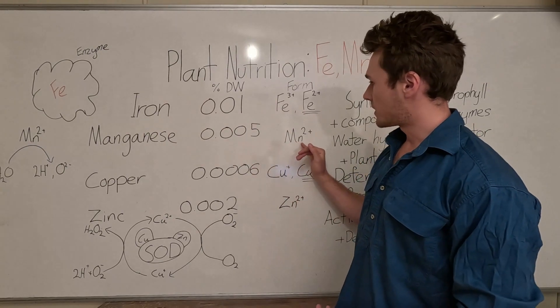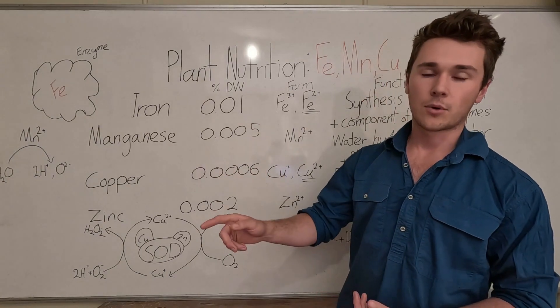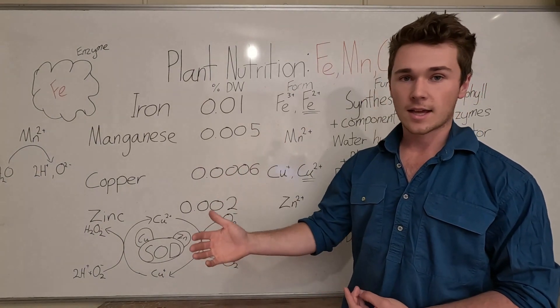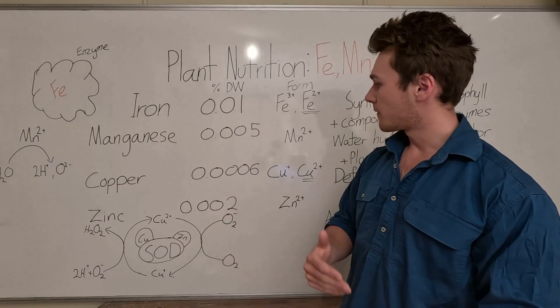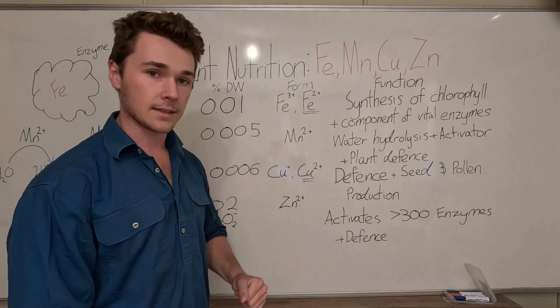Again it's in the reduced state so manganese can exist in a +3 and a +4 stage in our soil, but it's only in the +2 stage that's actually available for our plants.